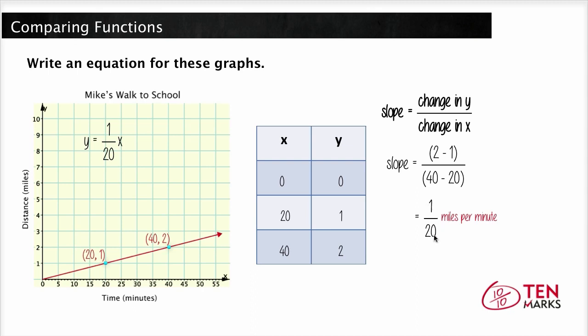Or his speed which is distance divided by time is 1/20th miles per minute. This slope is the rate of change of the graph. Every time y changes by 1, x changes by 20. So this is a function of distance over time. And the rate of change which is the slope is Mike's walking speed to school. As this is a proportional relationship, the slope is constant so the speed is constant. Mike is walking at a constant speed.